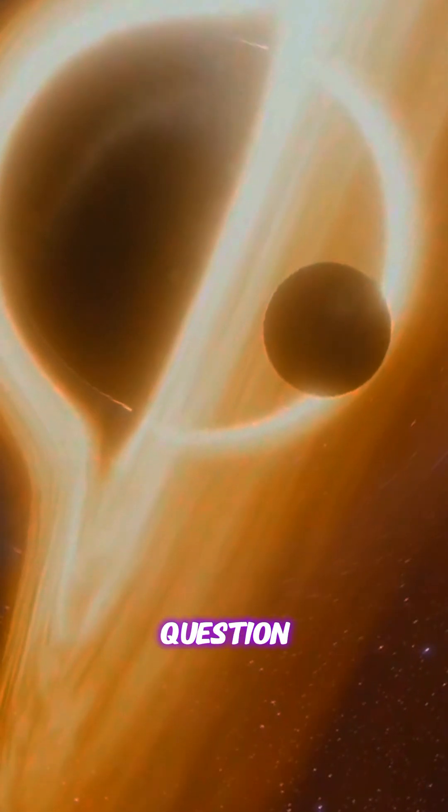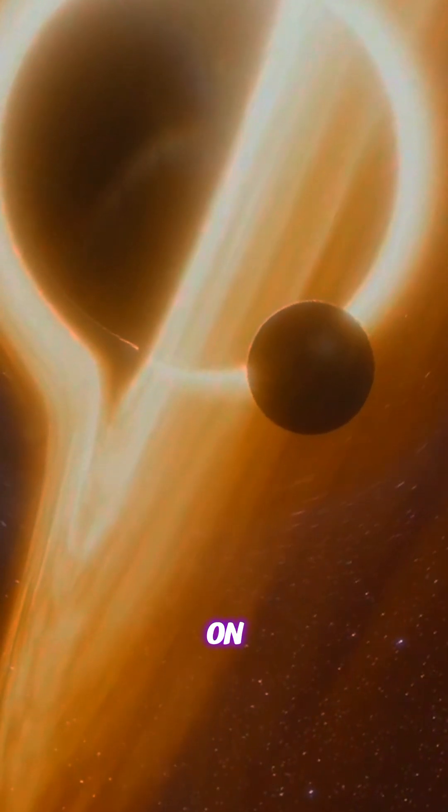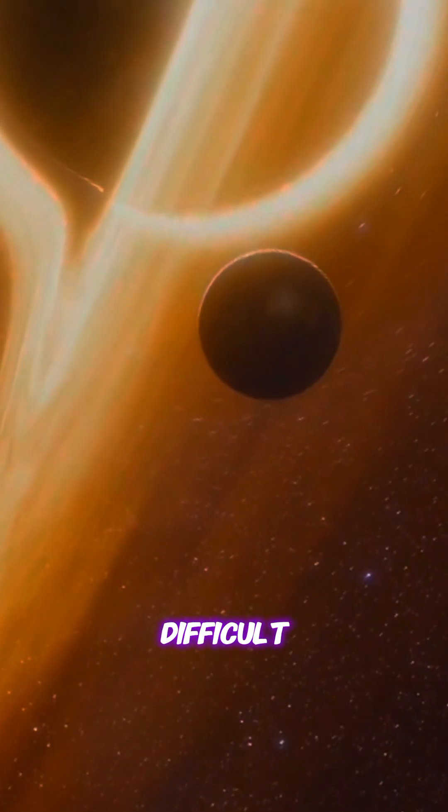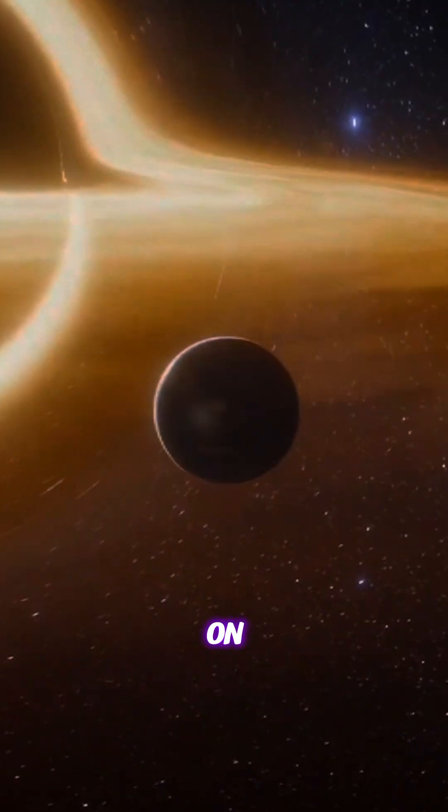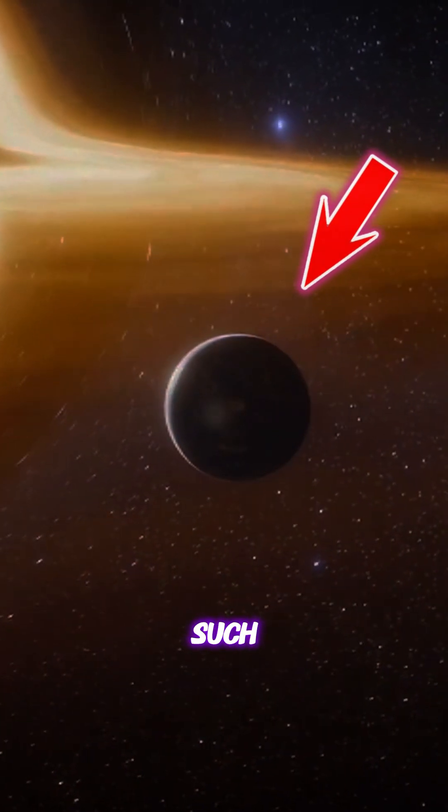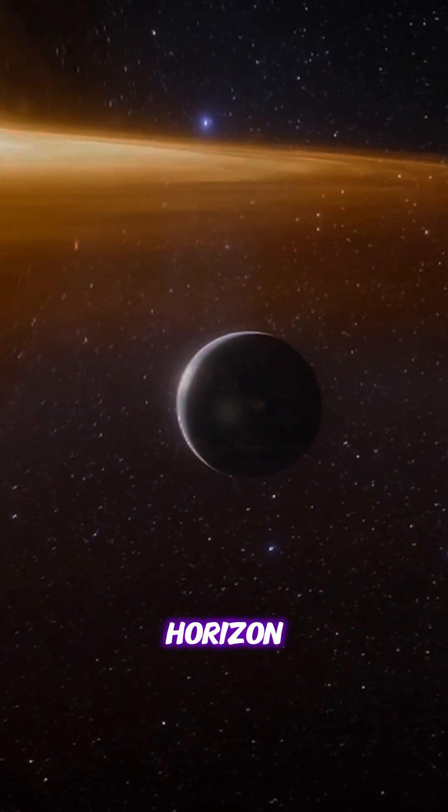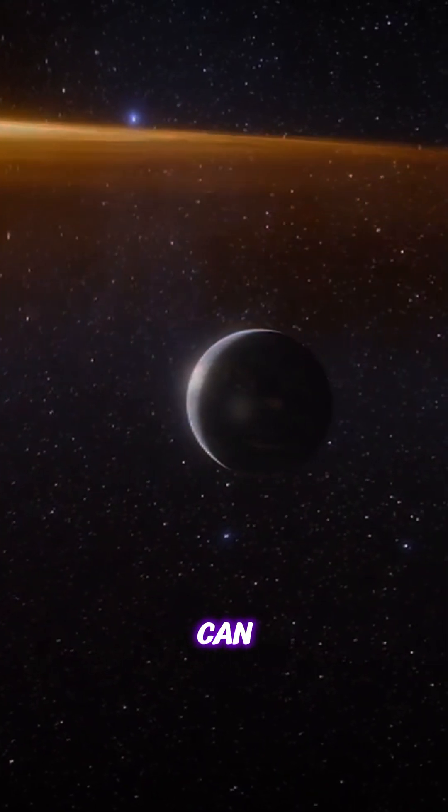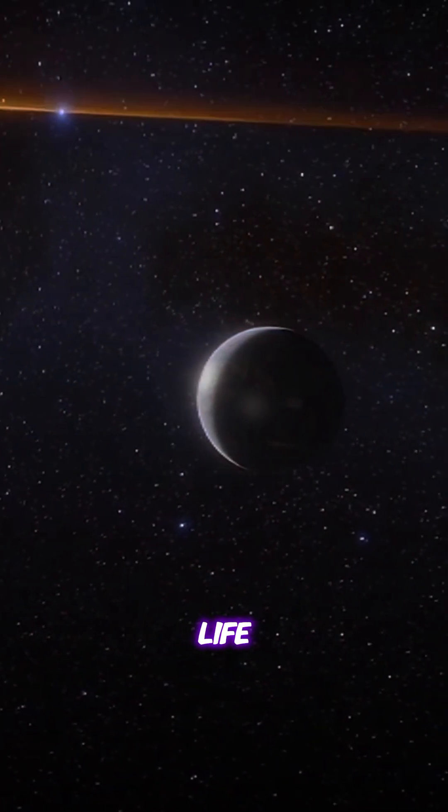But here comes a big question. Will life be possible on any blanet? It seems very difficult, because for the possibility of life on such a planet, it is necessary that the planet is closer to the event horizon of the black hole so that it can receive light. Only then can life be possible there.